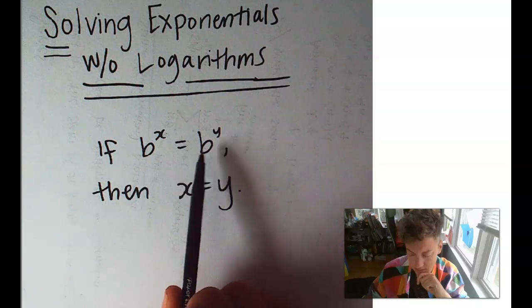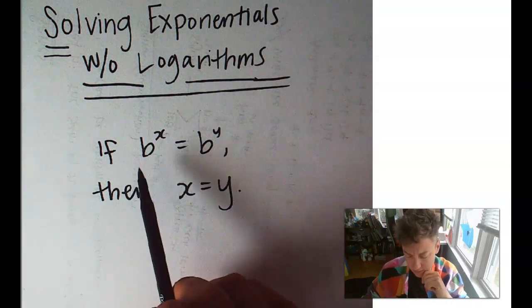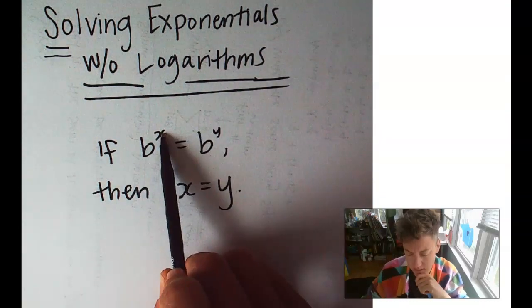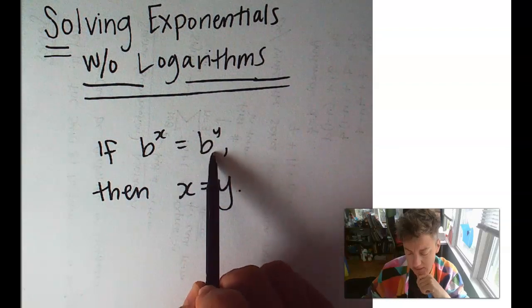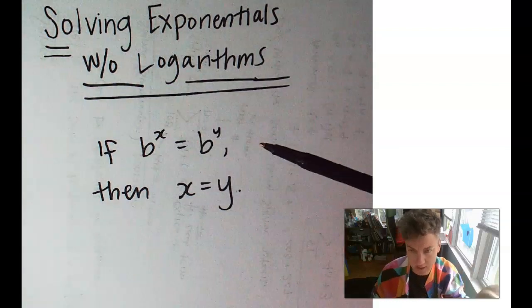Why? Well, because it has to be. If we have a base to some exponent that equals that same base, then that exponent has to be equal.